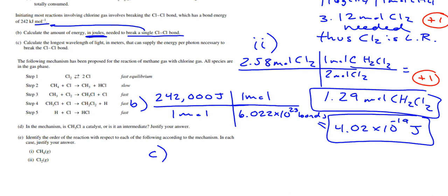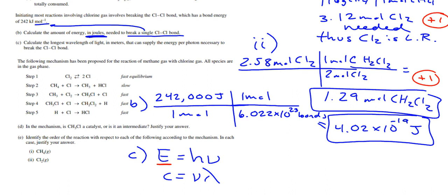Calculate the longest wavelength of light in meters that can supply the energy per photon necessary to break the Cl2 bond. If you look at your equation sheets, they give you two equations: E = hν and c = λν. If you combine those together, you get E = hc/λ. We have that energy from part B, and we're solving for lambda. You can do this step by step - find the frequency, then plug it in to find the wavelength - or use the combined equation directly.